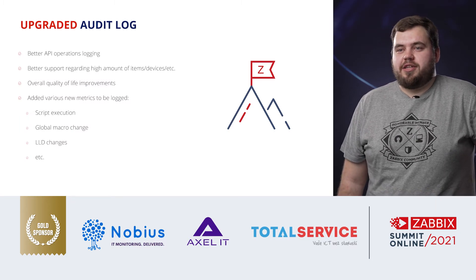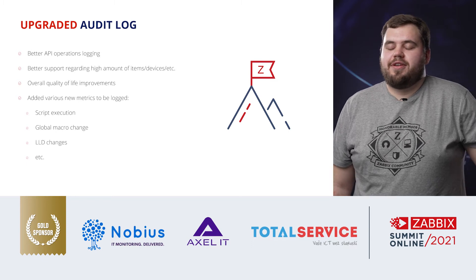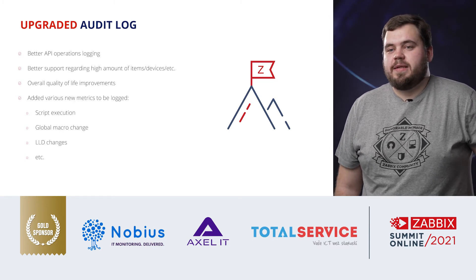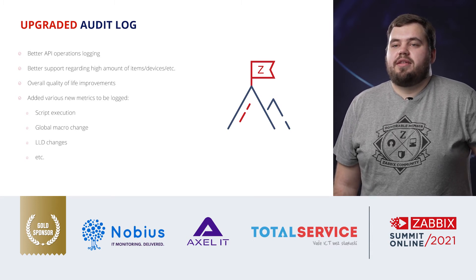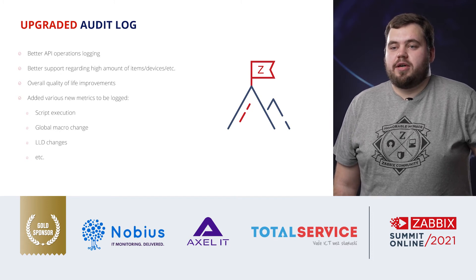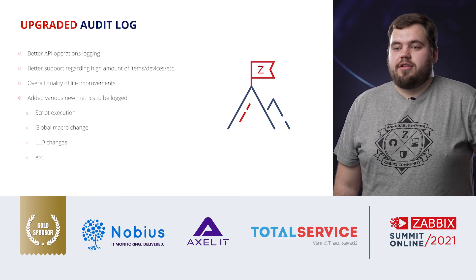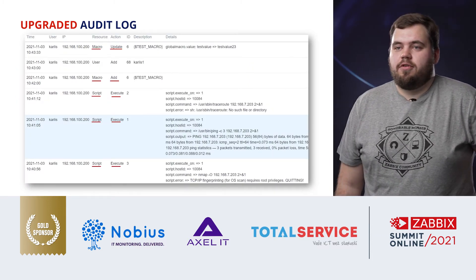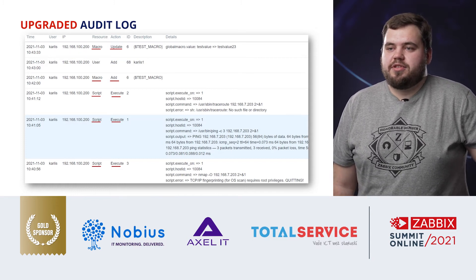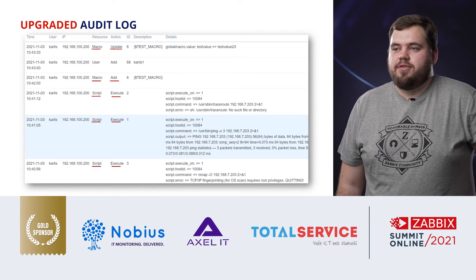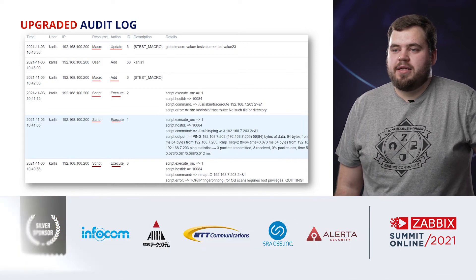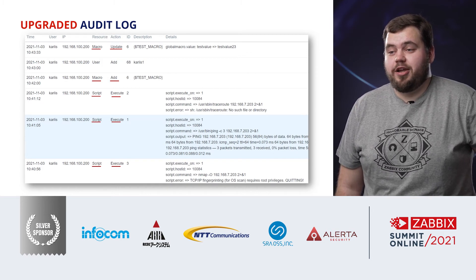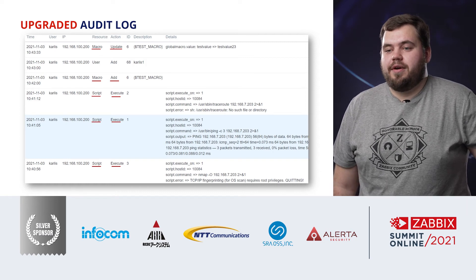The audit log is better now — you can log a lot of things you couldn't before, and API operation logging is much improved. There are also quality-of-life improvements and a higher volume of devices and items being logged. New metrics being logged include script execution, global macro changes, LLD changes, and more. On screen you can see examples such as macro addition, macro updating, and script execution — you can see which values changed and what the script outputs are. Two scripts are failing with errors and you can see those errors, while only one ping script is working.